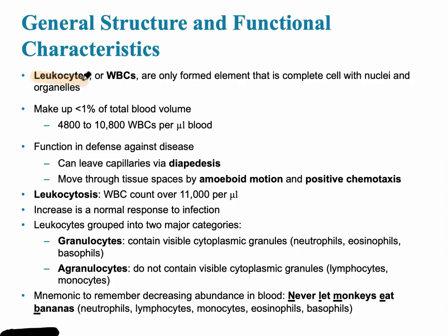White blood cells, or leukocytes, are the only formed element that's actually a complete cell with a nucleus, because the red blood cell does not have a nucleus. The normal count for white blood cells should be less than 1% of the total blood volume, and the number should be between 4,800 to almost 11,000 white blood cells per microliter. There are a couple of interesting things that white blood cells do.